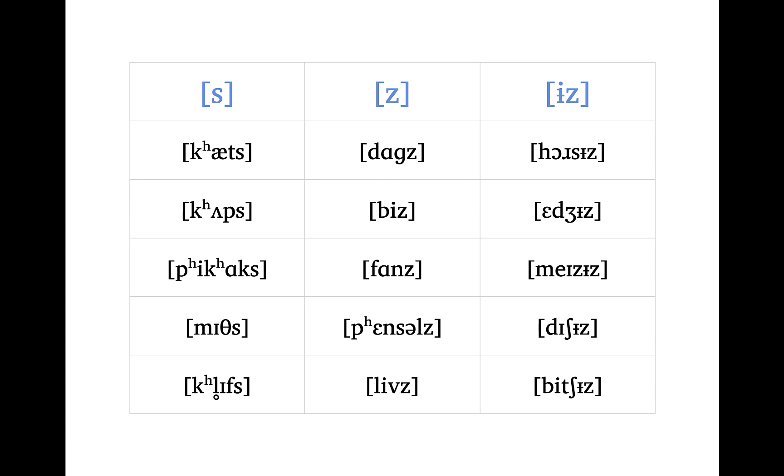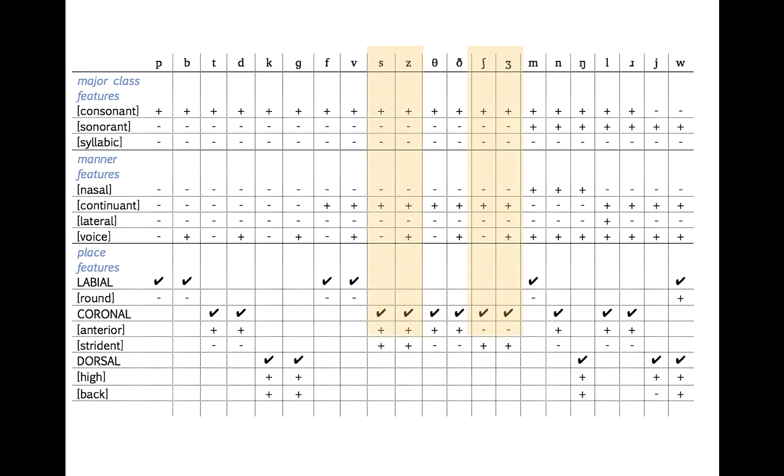Look down this list of words, and you'll see that they all end in fricatives: [s], [z], [ʃ], or [ʒ]. But it's not all fricatives, as we can see from myths, cliffs, leaves. Looking at the feature chart, we see that it's a particular class of coronal fricatives, the ones that are [+strident].